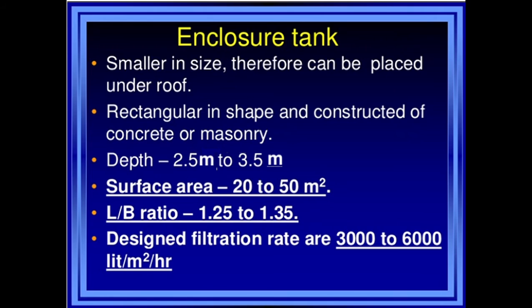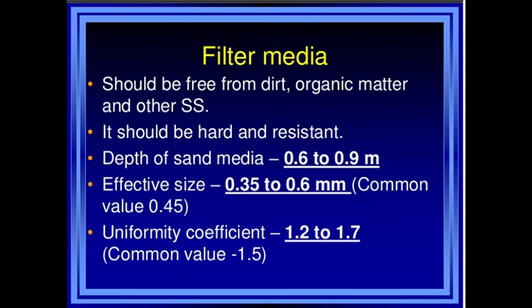The design filtration rates of the tank are 3,000 to 6,000 liters per square meter per hour. The second part is the filter media. Filter media should be free from dirt, organic matter, and other suspended solids. Filter media should be hard and resistant. The depth of the sand media is about 0.6 to 0.9 meters.